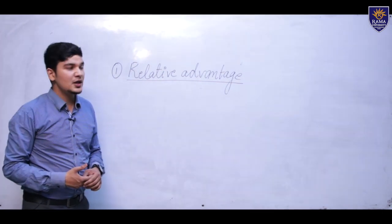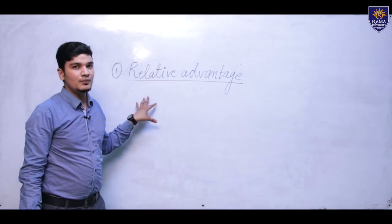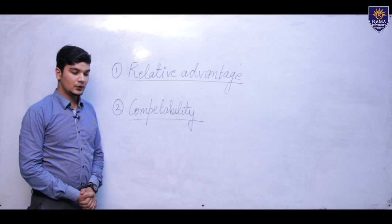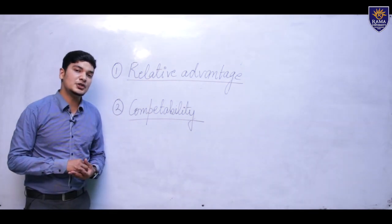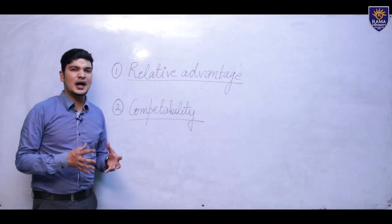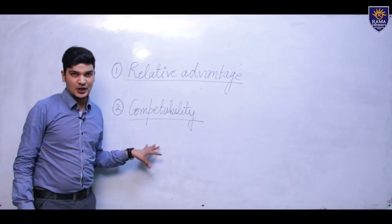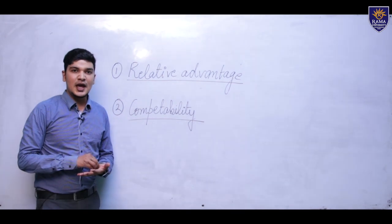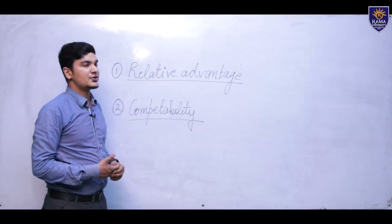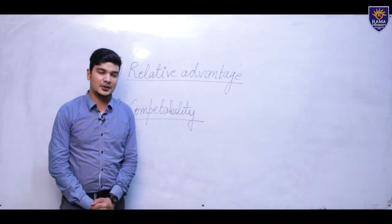In the adopter category, major adopters are those who find that the relative advantage of a new innovation is better than what they were previously using. Another key characteristic is compatibility — the new innovation should be compatible with the society in which it is to be used. Adopters tend to adopt technologies that are compatible with and feasible for use in their society. These are the characteristics responsible for a new technology being adopted sooner than the previous technology available.